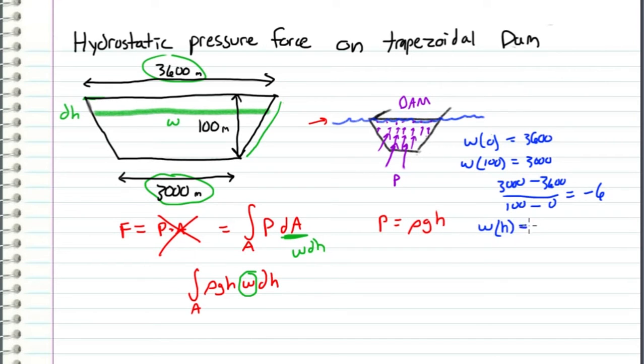We can double check this equation by plugging in w(100). When we do, we get 3600 - 600 = 3000, which is the bottom dimension. So we're good.